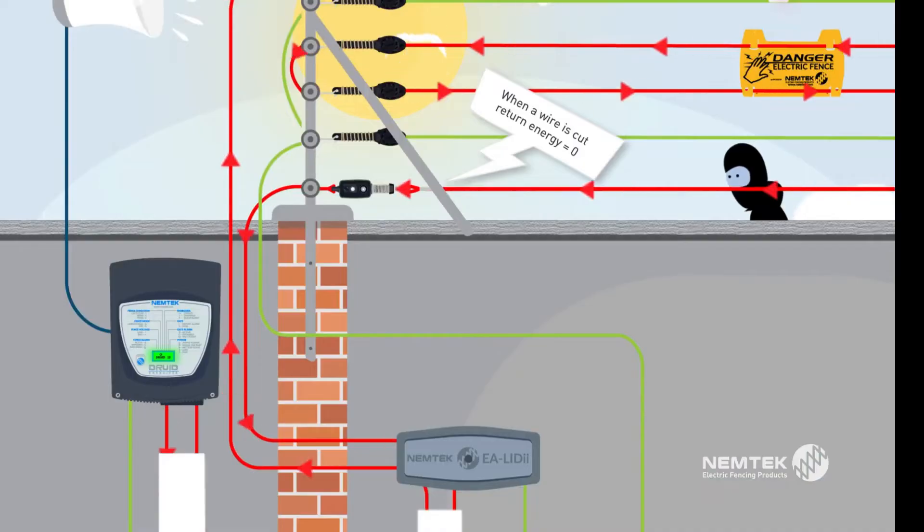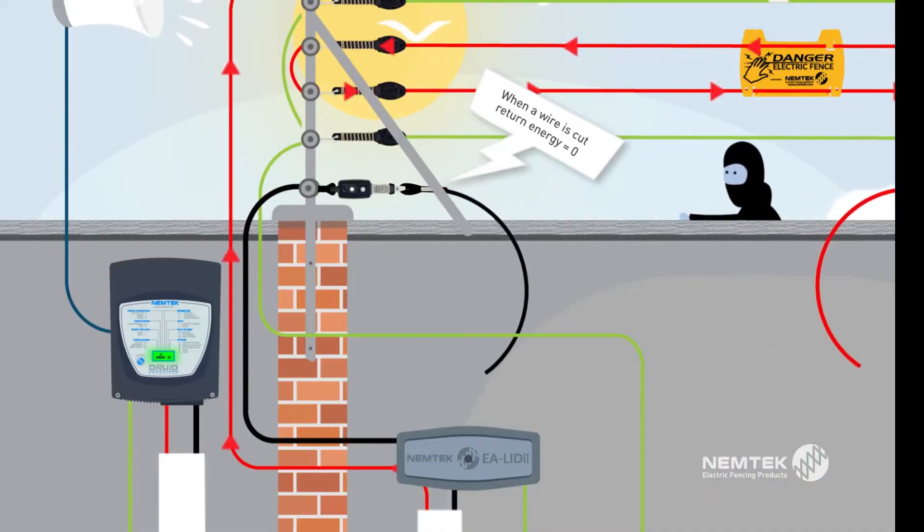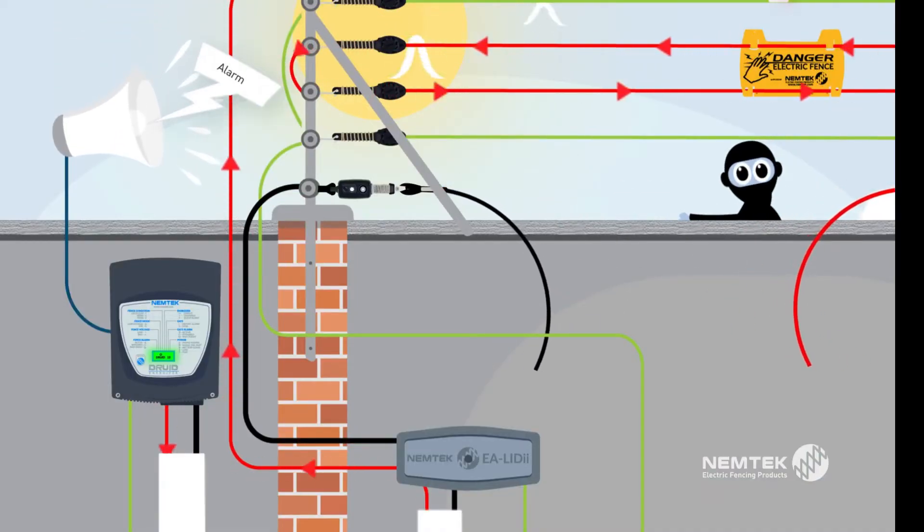If the wire is cut, the high voltage pulse returning to the energizer will be zero, the alarm will be triggered and the energizer display will go red.